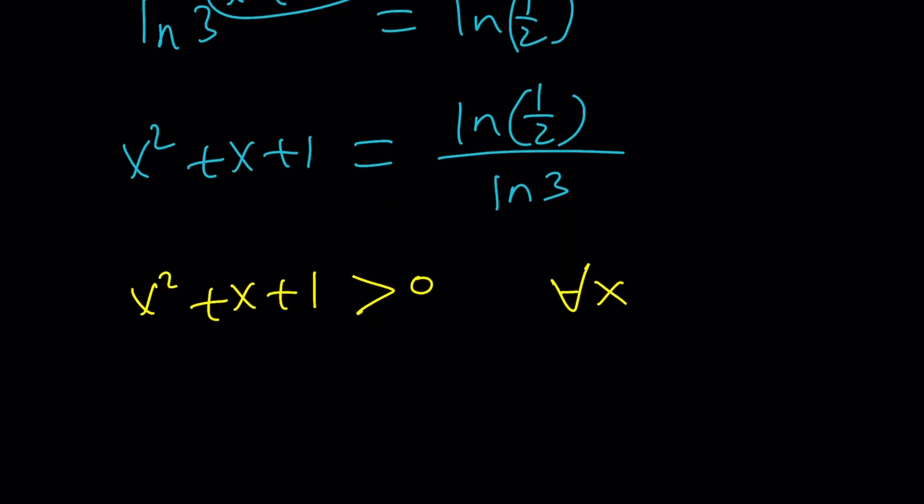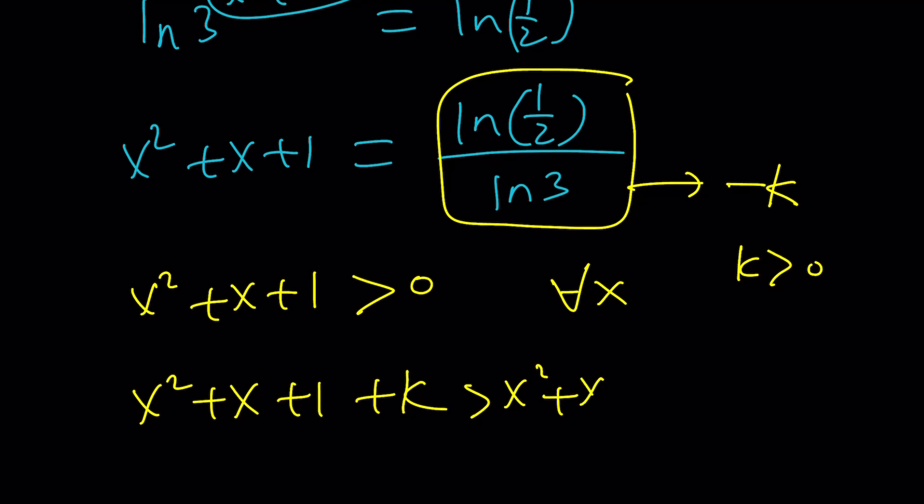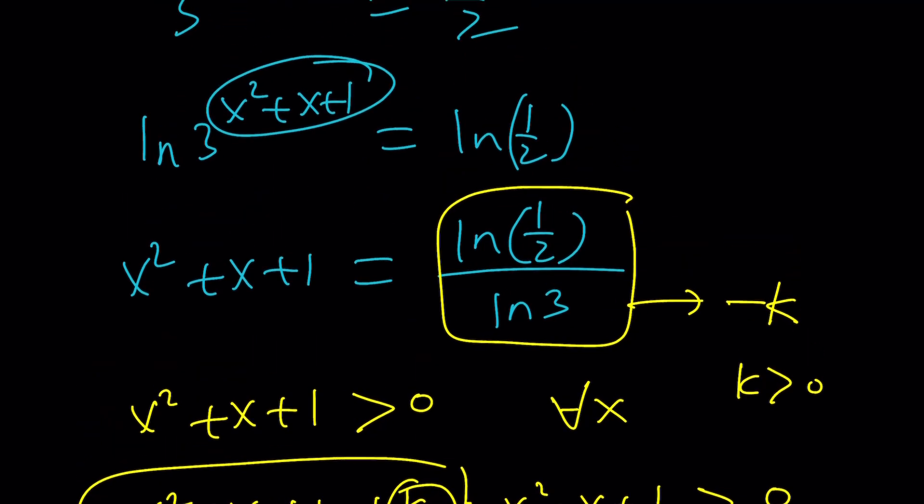And then notice that this expression is less than 0. Something that has to be positive equals something negative? No way. Or you can call this expression negative k where k is positive, then you get the following. K is positive, remember. So this expression is obviously greater than x squared plus x plus 1 because k is positive. And of course this is greater than 0. So this is always positive. Therefore it can never be equal to 0. Therefore no real solutions from there either.